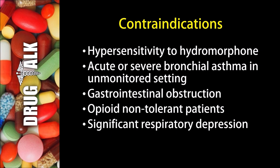Now, contraindications or reasons we would not be able to give this medication: the first would be if a patient had a hypersensitivity to hydromorphone or an allergy. We wouldn't be able to give this medication to patients who have acute or severe bronchial asthma in an unmonitored setting, typically without the necessary resuscitative equipment available. It would be contraindicated in patients who have a gastrointestinal obstruction, in patients who are opioid non-tolerant, and in patients who have significant respiratory depression.